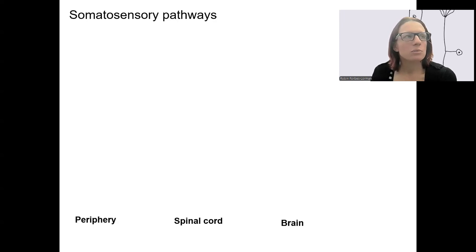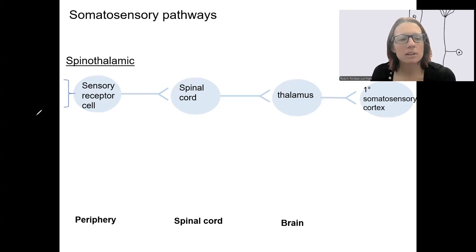The first one we're going to talk about is the spinothalamic. Spinothalamic is beginning in the periphery with a sensory receptor cell, let's say it's going to detect some sort of touch.